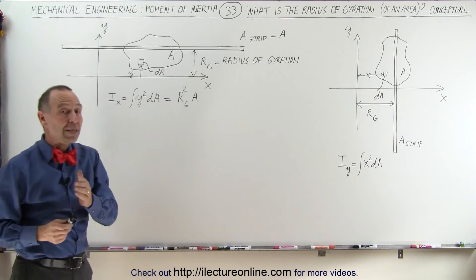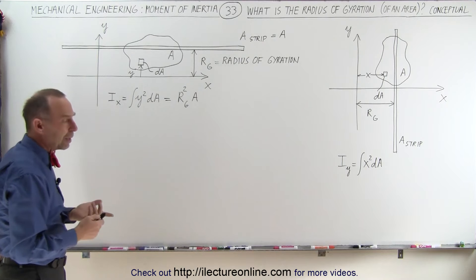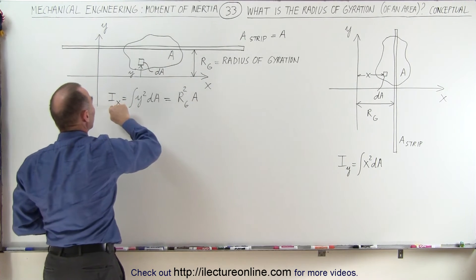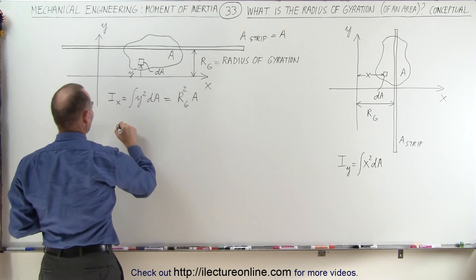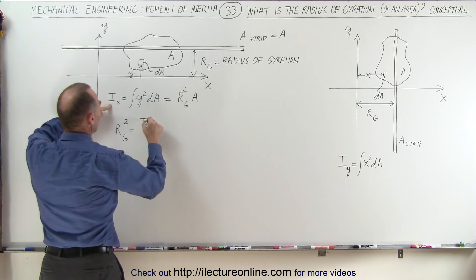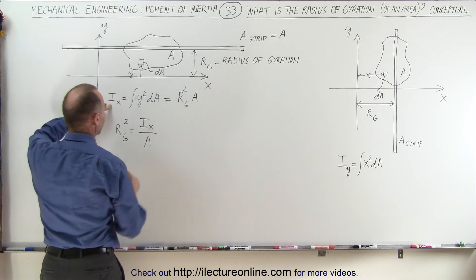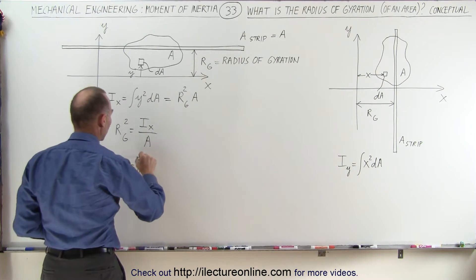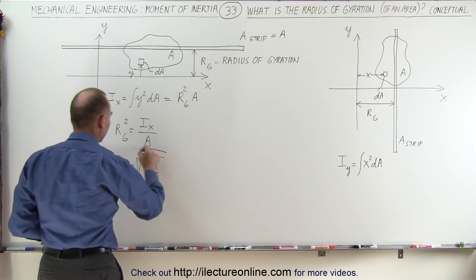That's what we mean by the definition of the radius of gyration. If we solve for it in terms of the area of the figure and the moment of inertia of the figure relative to the x-axis, we can say that the radius of gyration squared is equal to the moment of inertia relative to the x-axis divided by the area of the figure. In other words, the radius of gyration is equal to the square root of the moment of inertia divided by the area.